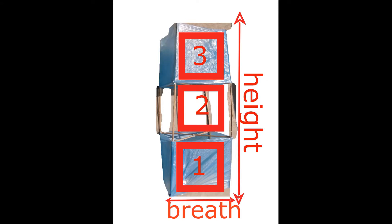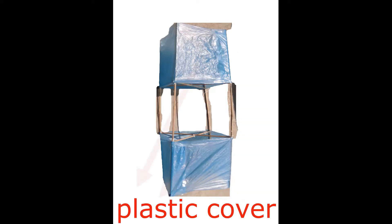I don't speak English well, so any mistakes in my speaking, please excuse. We imagine the basic structure of the box kite like three equal cubes ordered over each other. The ends of the kite are covered by a thin weightless sheet, like paper or plastic covers or anything you have.